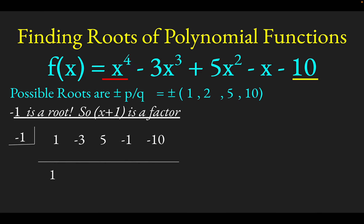Bring down the 1. 1 times negative 1 gives you negative 1. Negative 3 and negative 1 gives you negative 4. Negative 4 times negative 1 gives you 4. 5 and 4 make 9. 9 times negative 1 gives you negative 9. Negative 1 and negative 9 gives you negative 10. Negative 10 times negative 1 gives you positive 10. And we knew we were going to get a remainder of 0 because we already knew that x plus 1 was a factor.